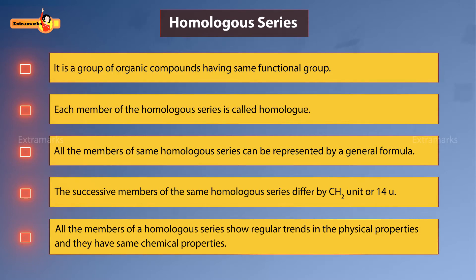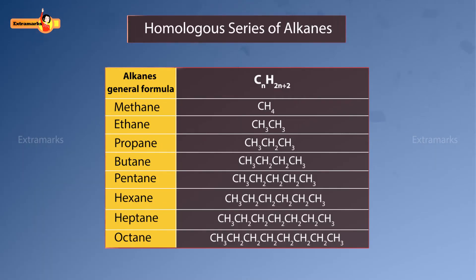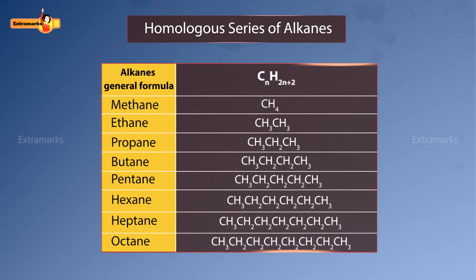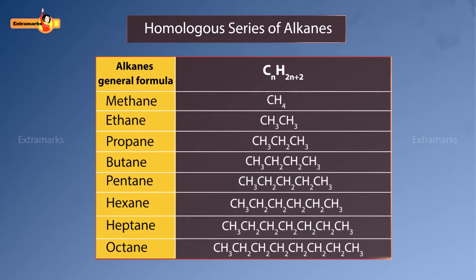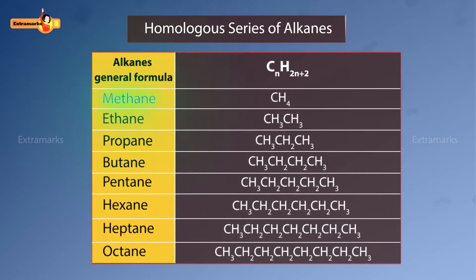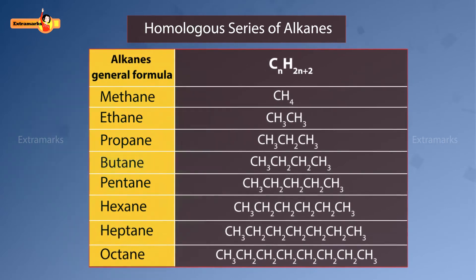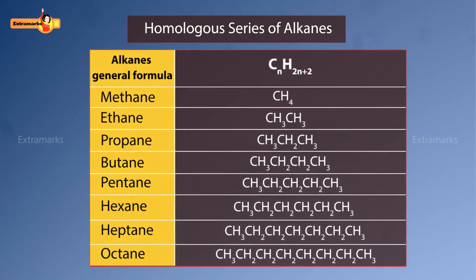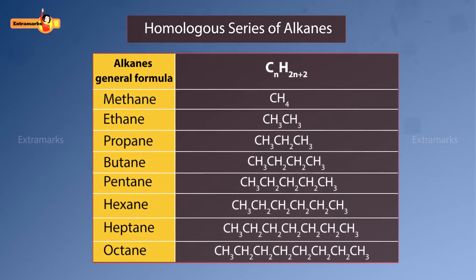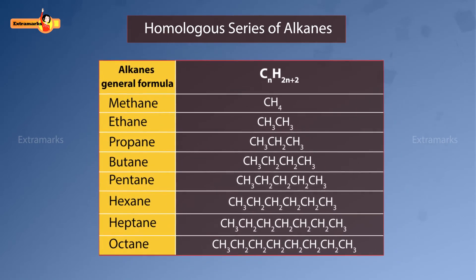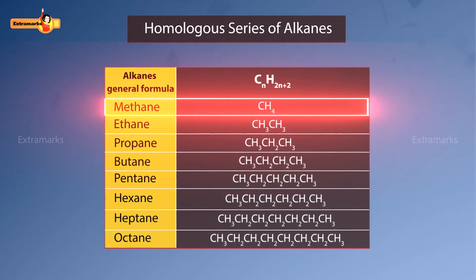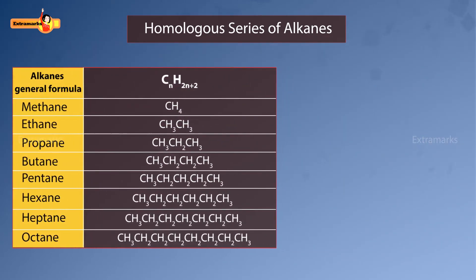All the members of a homologous series show regular trends in physical properties and have the same chemical properties. Let's decode this with the help of the homologous series of alkanes — the simplest hydrocarbons. The homologous series of alkanes comprises methane, ethane, propane, butane, pentane, hexane, heptane, octane, and so on. All of them are called homologs. Methane is the first member of the homologous series of alkanes.